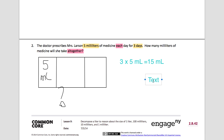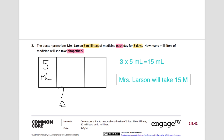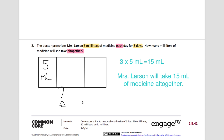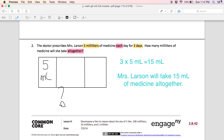Writing this as a sentence: Mrs. Larson will take fifteen milliliters of medicine all together. Notice when I wrote milliliters I wrote a lowercase 'm' and a capital 'L.' We use that capital L when we're talking about liters, because if we use a lowercase 'l' it looks like a one and it can confuse our addition, subtraction, or any other type of problem. This comes to the end of the first side of lesson nine homework.